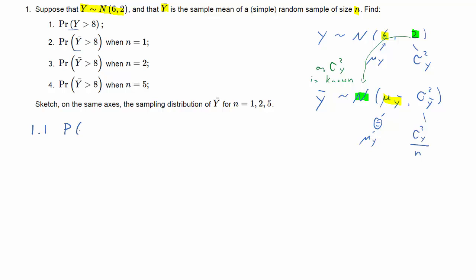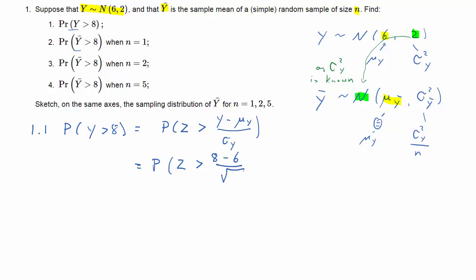Let's go to question 1.1. We want to calculate the probability that Y is larger than 8. We need to translate that into a standard normal probability to get values from the table, so we apply the standardization formula. That's the probability that Z is larger than (8 − 6) divided by the square root of 2, where 6 is the mean of Y. So that's 1.41.